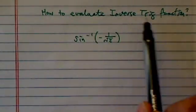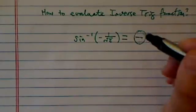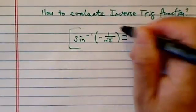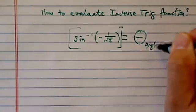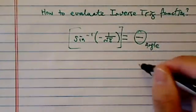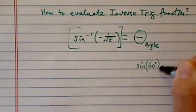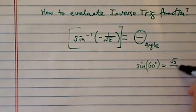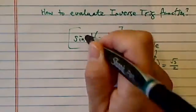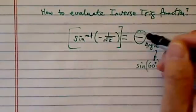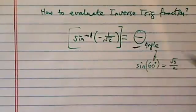How do we evaluate an inverse trig function? The key thing to always recognize is that when you're given an inverse trig, it's always an angle. This is different than if you were given sine of, let's say, 60 degrees — that's equal to radical 3 over 2. An angle goes into the sine. But the minute they give you inverse sine, you always have to recognize this whole thing is equal to an angle.